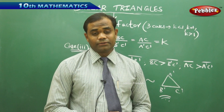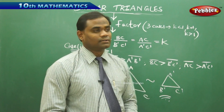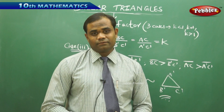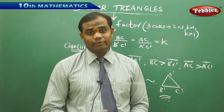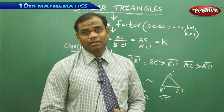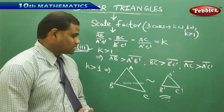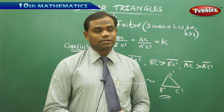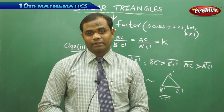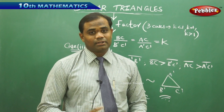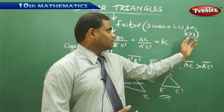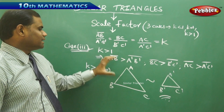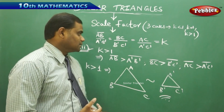Scale factor has a very important role in understanding to what extent the object is enlarged or diminished. For example, if k equals 2, then k is greater than 1, so when k is 2, each of the lengths is twice as large. That means AB is twice A'B', so each side of the original is double the image side.